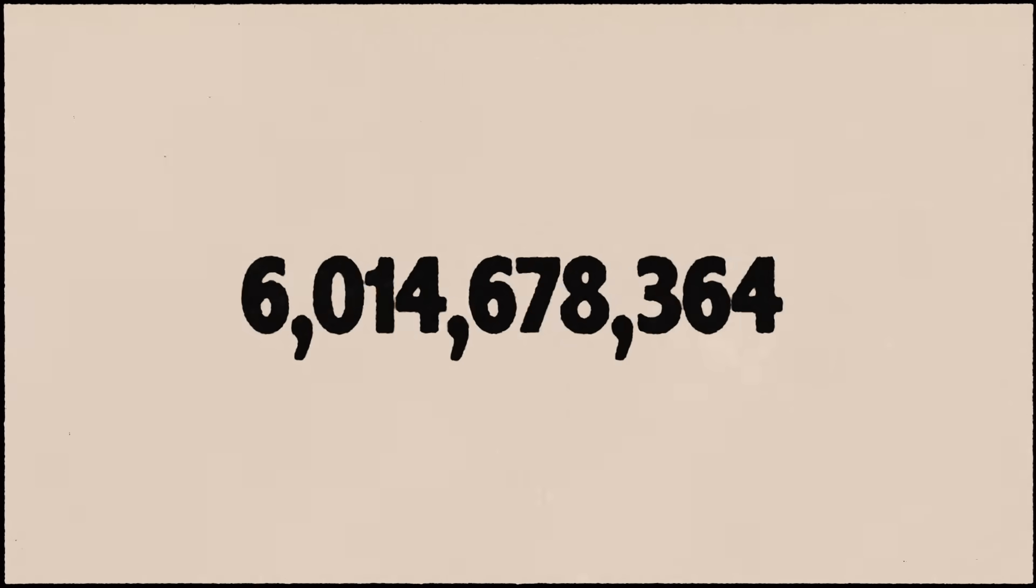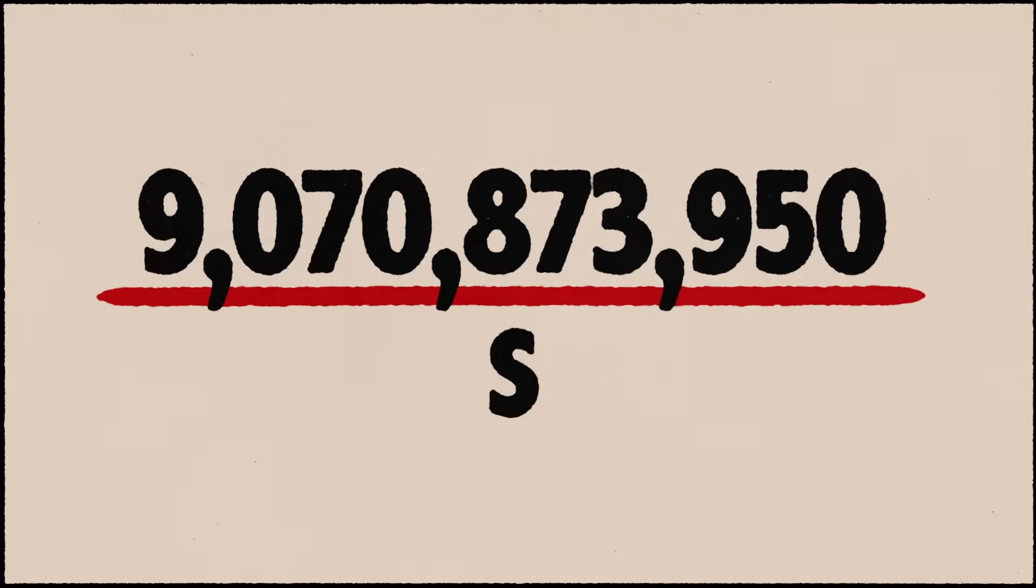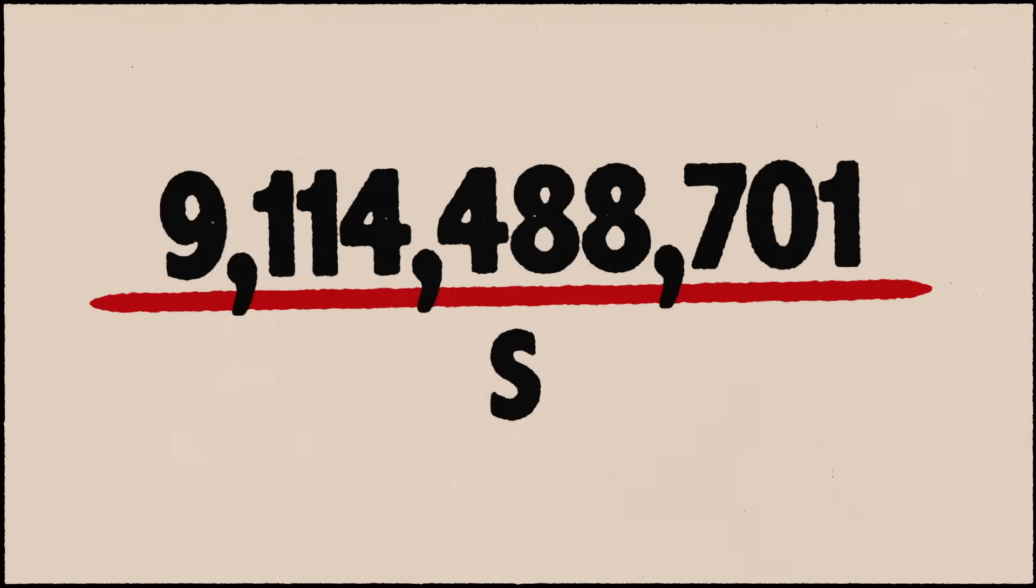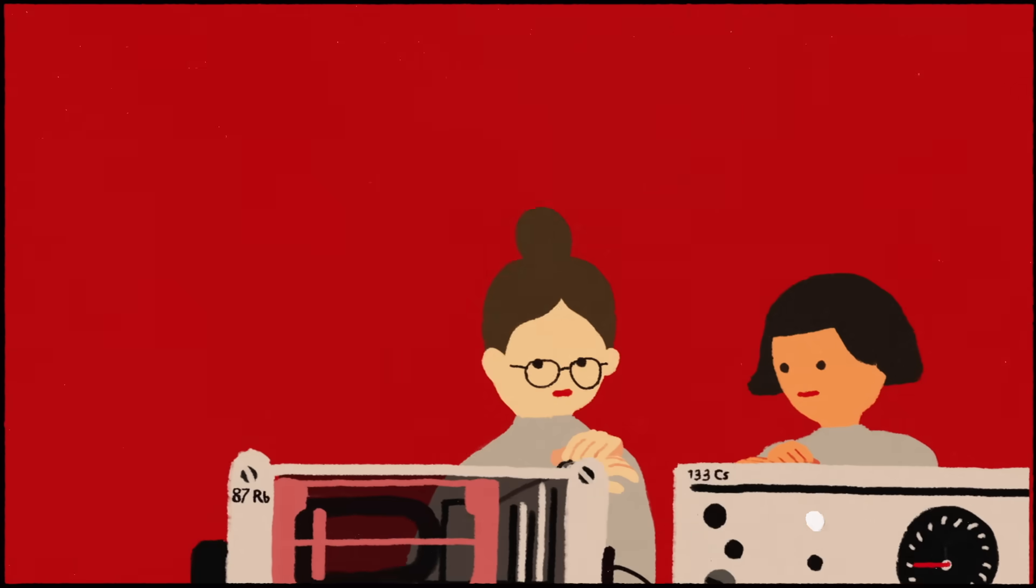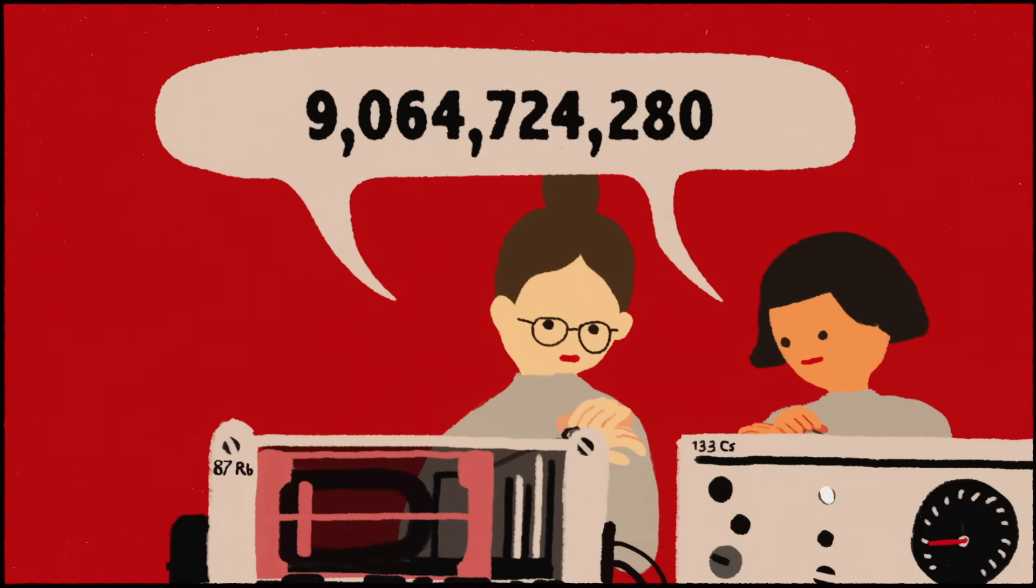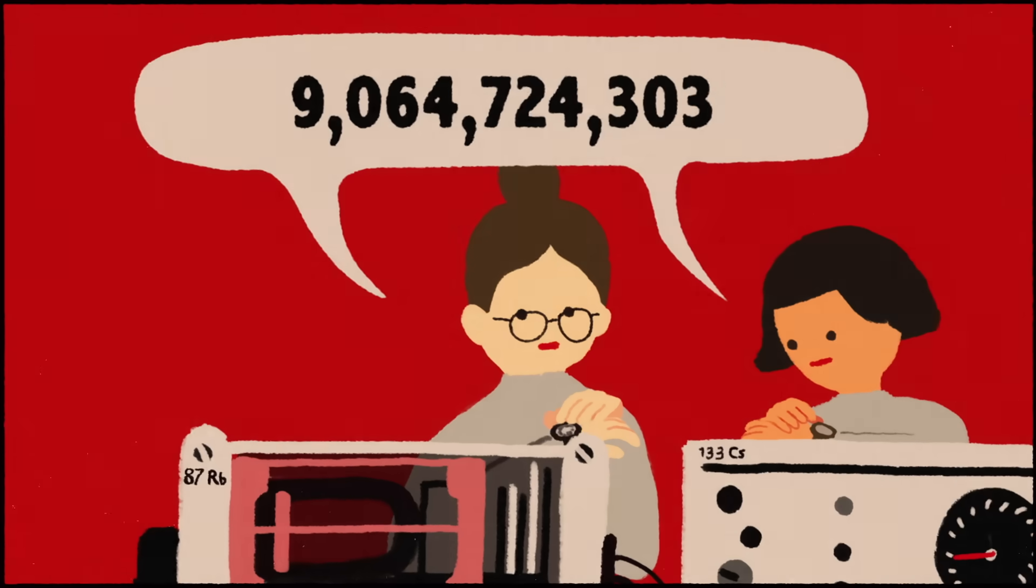Some atoms can oscillate over 9 billion times per second, giving atomic clocks an unparalleled resolution for measuring time. And since every atom of a given elemental isotope is identical, two researchers using the same element and the same electromagnetic wave should produce perfectly consistent clocks.